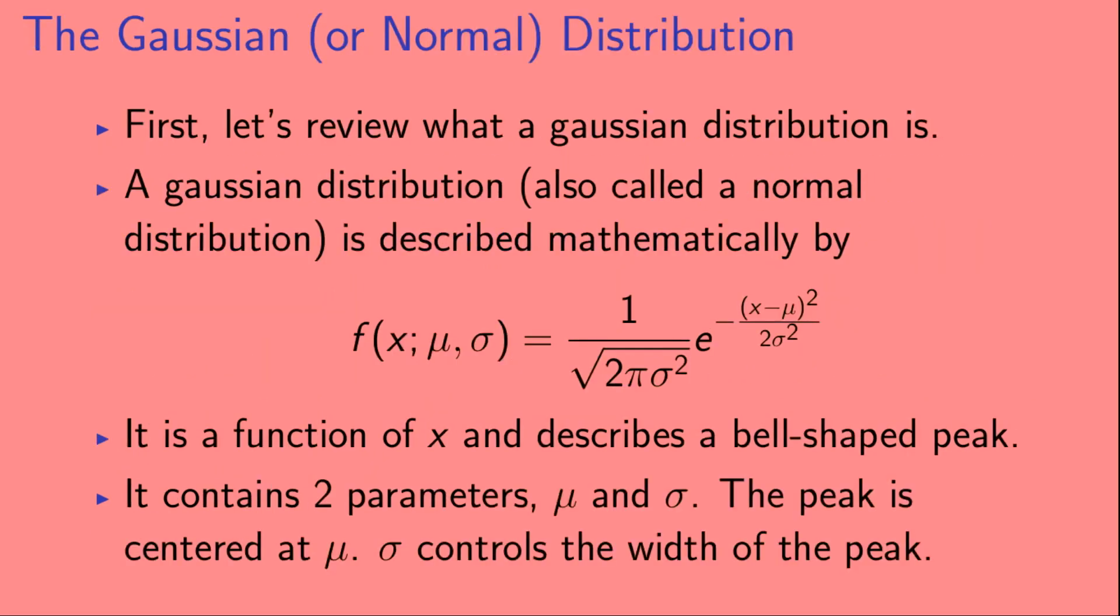First, let's review what a Gaussian distribution is. A Gaussian distribution, also called a Normal distribution, is described mathematically by the formula shown here. It is a function of x and describes a bell-shaped peak. It contains two parameters, mu and sigma. The peak is centered at mu, and sigma controls the width of the peak.